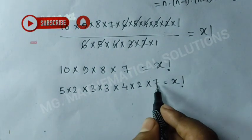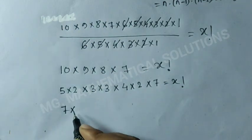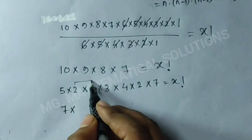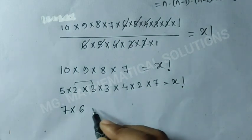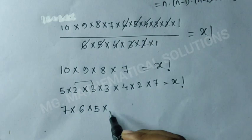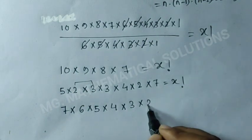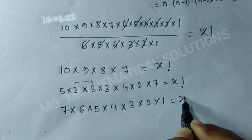Here 7 is the biggest number, so first we write 7. Next 6, 3 times 2 equals 6 times 5 times 4 times 3 times 2 times 1 equals x factorial.